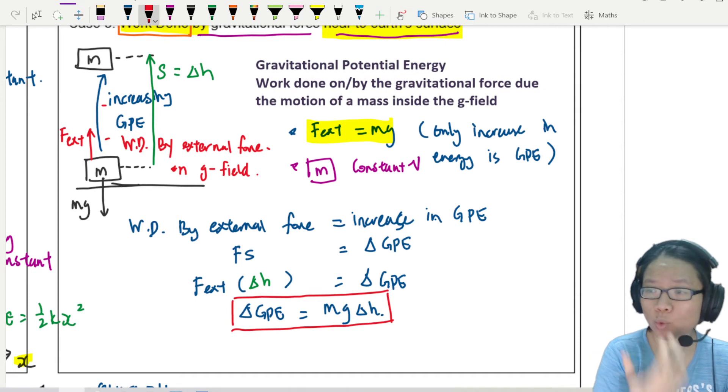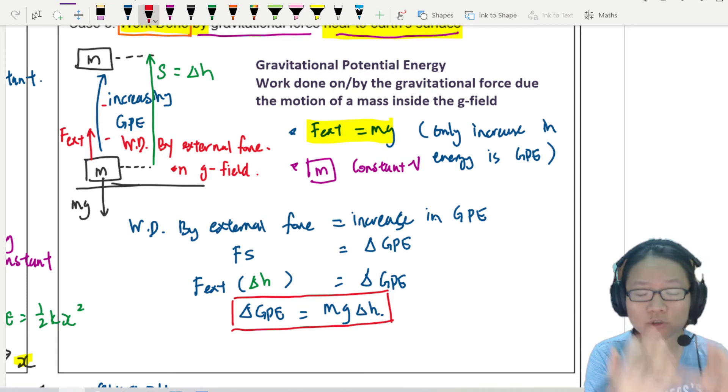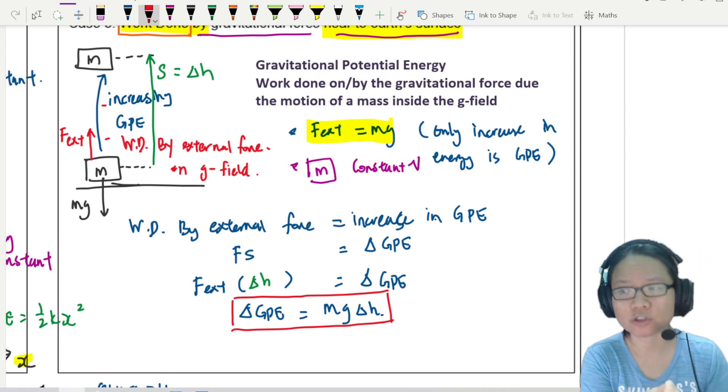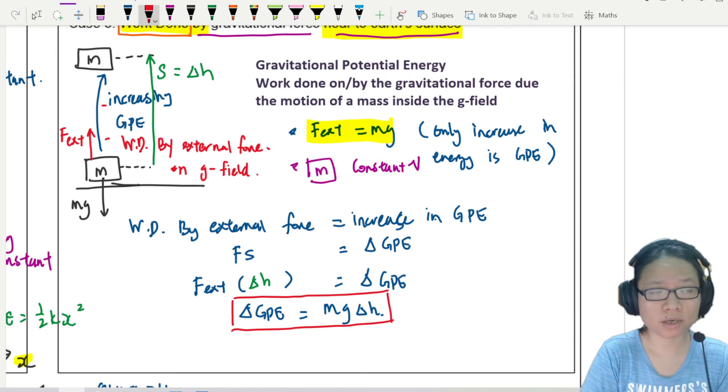All the energy equations that you have all must come from the definition of work done. Because we need work done to convert energy. So that's the idea that I want you to keep it in your brain whenever you look at energy conversion. Something is doing work. In this case, it's the external force.